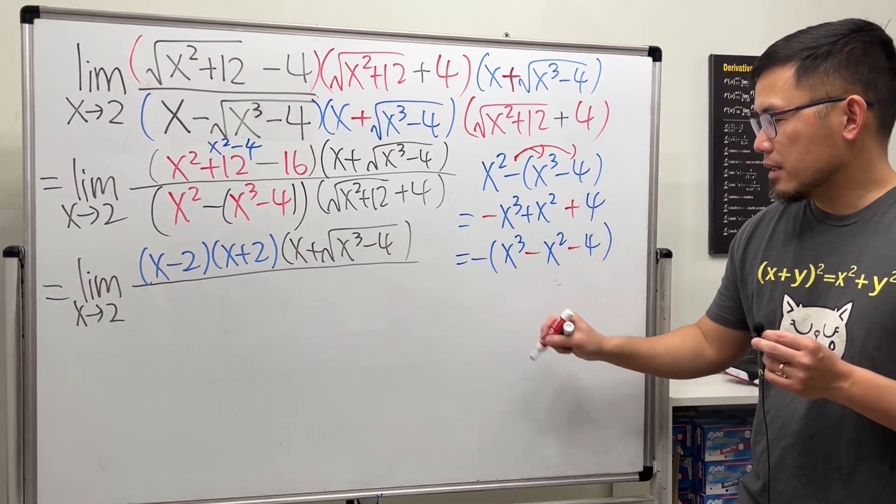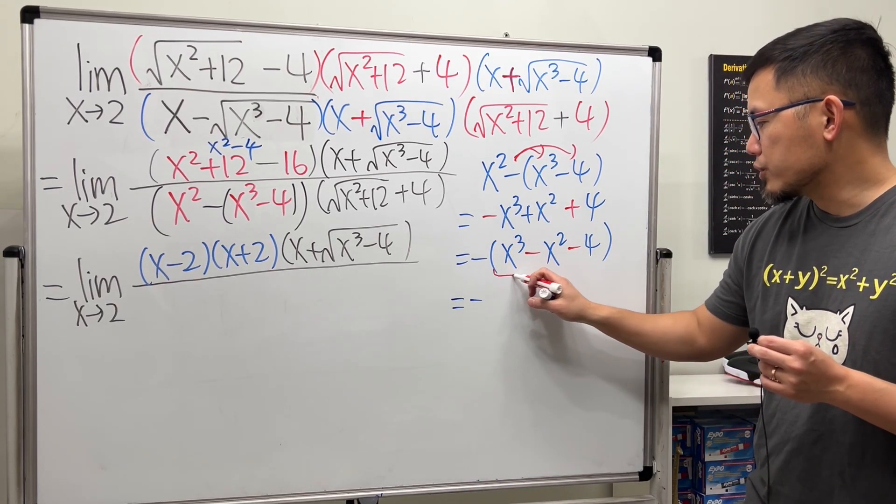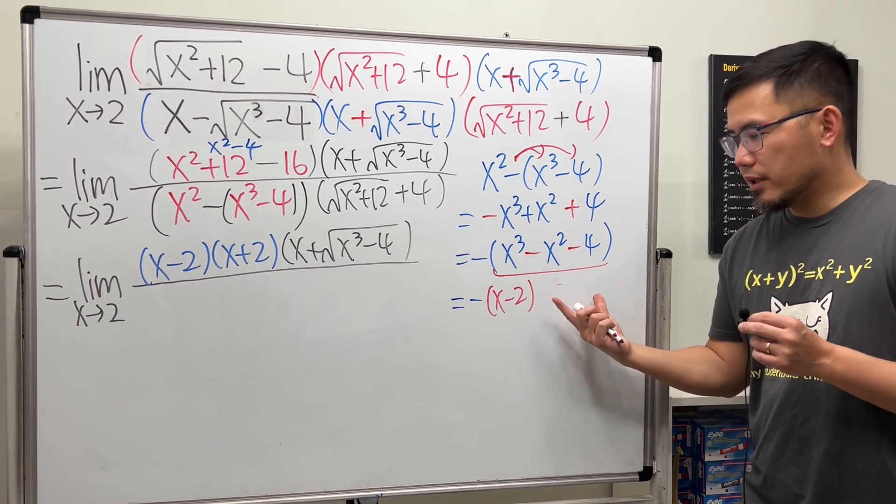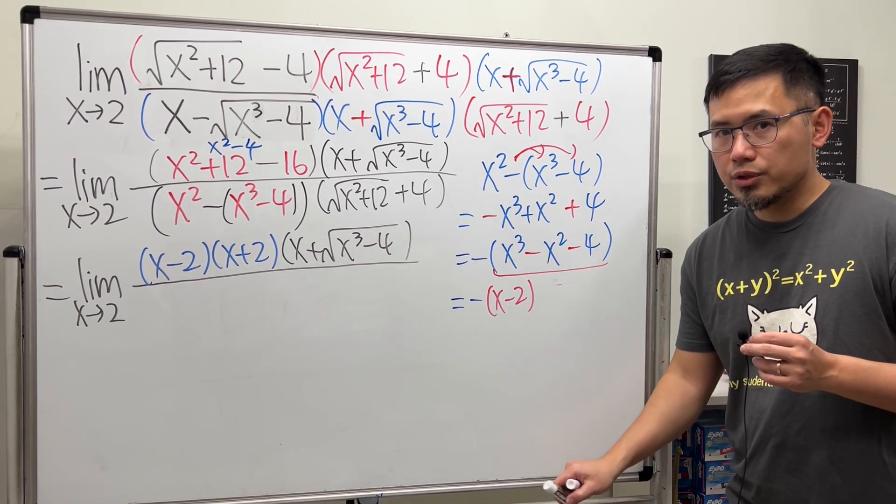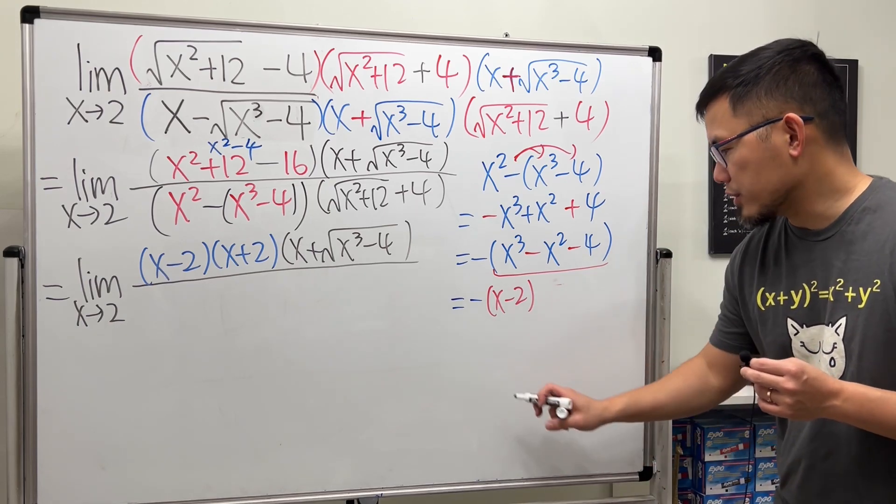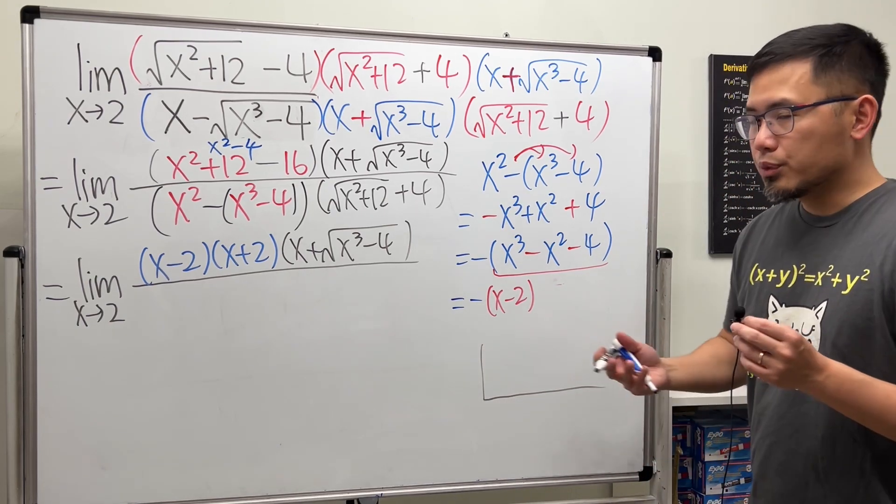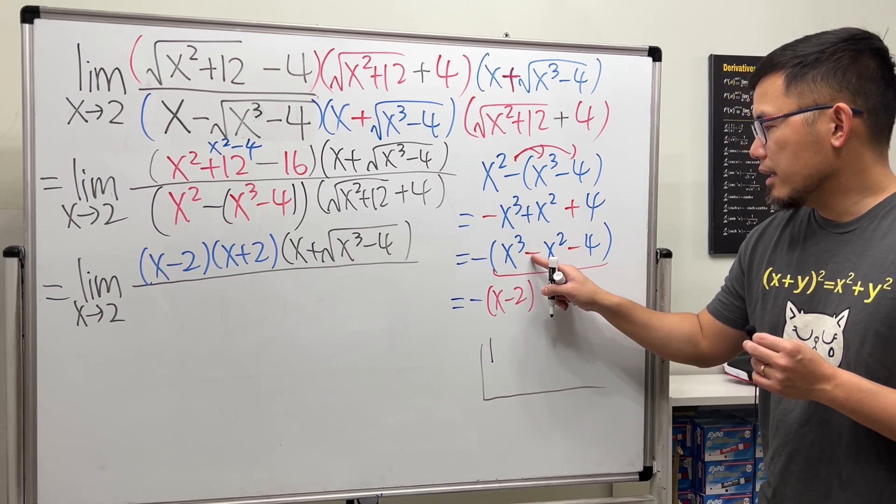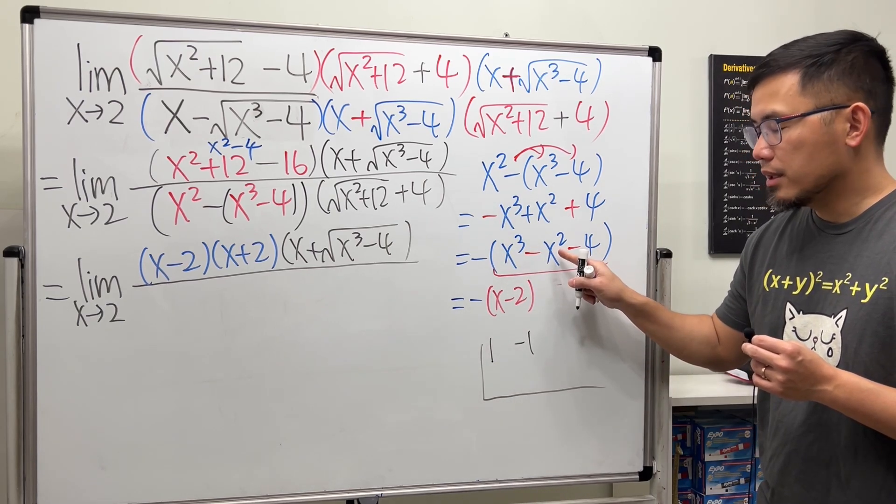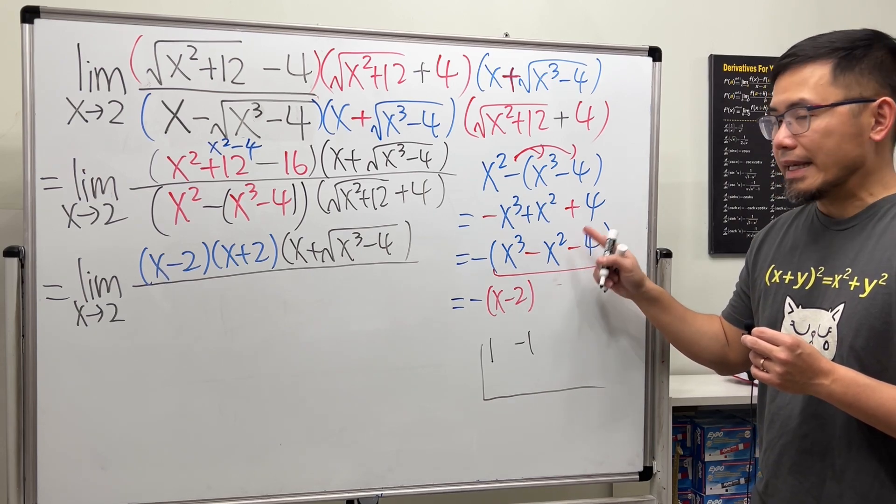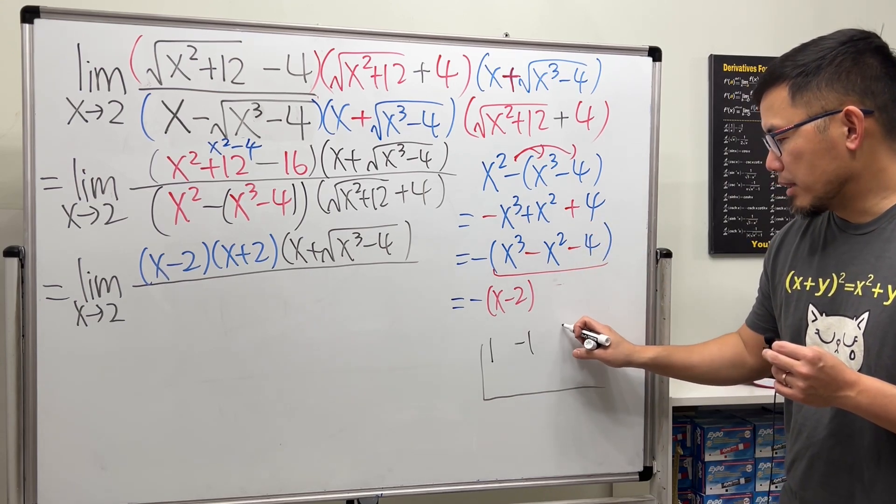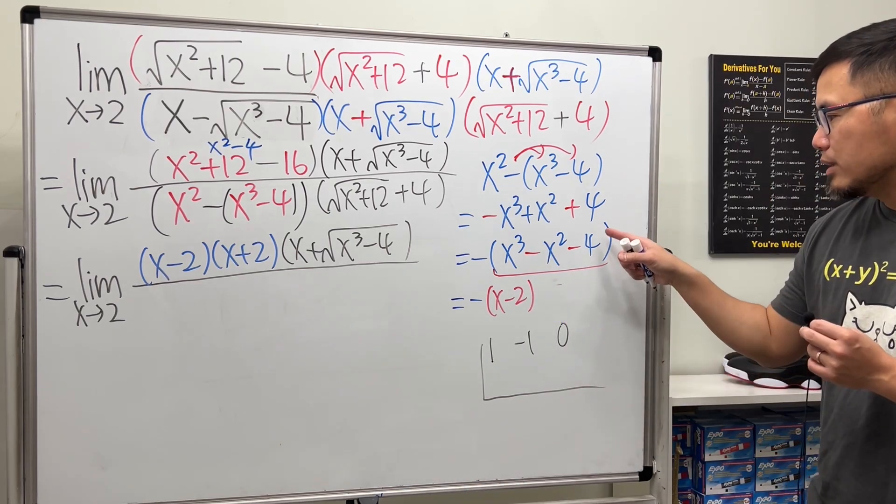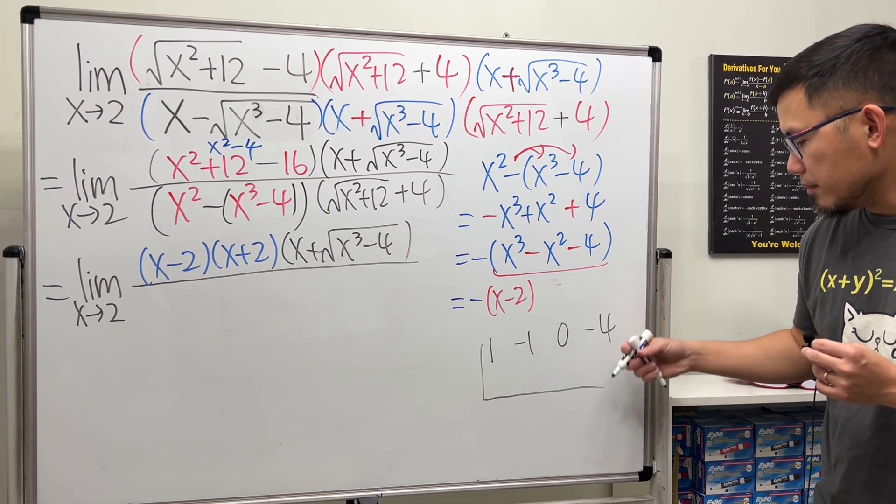That means, if we just focus on this portion, we can have x minus 2 here, and we have to figure out the remaining part. To do so, let's use the synthetic division. So how do we do it? First, let's write down the coefficients. We have 1 here, and then negative 1 for the x squared. But notice there's no x to the first power. So it's like plus 0. So this is for the 0x to the first power. Lastly, we have the minus 4.